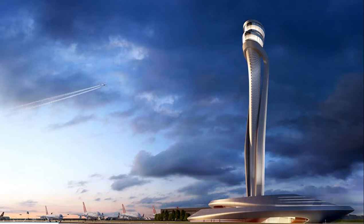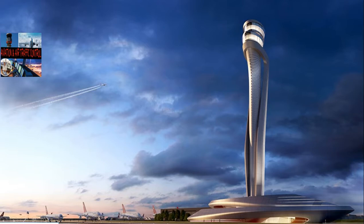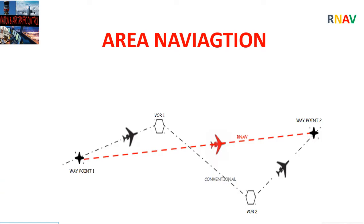Hi and welcome to the Aviation and Air Traffic Control series. This lecture is about area navigation — the freedom for aircraft to fly from point to point with or without using ground navigational aids.